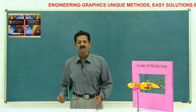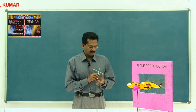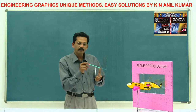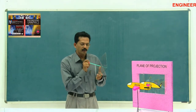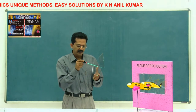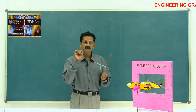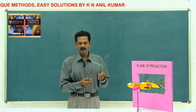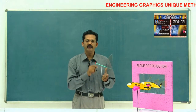A particle is the smallest size the human being can imagine. Let this be that particle in space, and let this be that imaginary plane. Then, the line joining this particle and its projection on this plane is known as the projector. Just to understand that concept, I am considering this small sphere as the particle. It will be a mere line only, and that line joining this particle and its 2D shape on this plane is known as the projector.